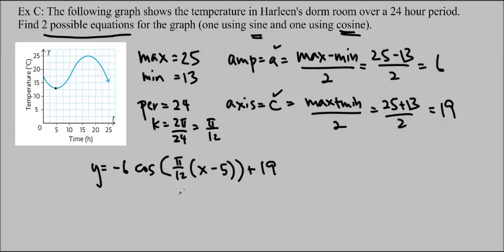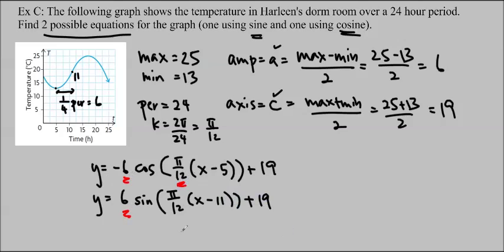Okay, so let's do the sine version. So we could look for the middle. This is about 19, and then we could estimate it. Another way that we could do it is we know that this distance here is one quarter of the period, which is 6 hours. So we know this is about 11, which is what I would have estimated at anyways. So y equals positive 6 sine, positive because it's going upwards from the middle, right there, positive 6 sine pi over 12 times x minus 11 plus 19. So you'll just notice that the amplitude, the K, and the axis are all staying the same. It's just this negative or positive and the phase shift that depend on sine or cos.